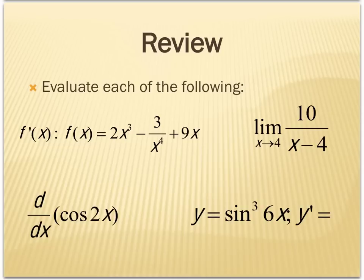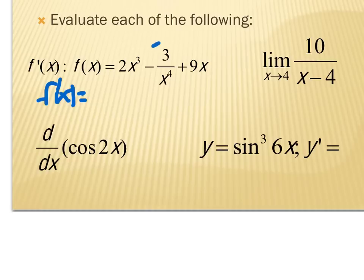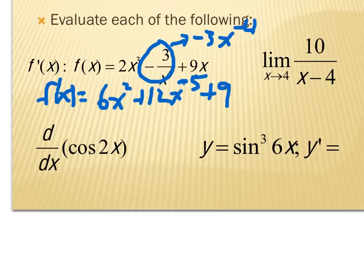More practice with different types of derivatives. The first one uses the power rule, but the middle term is tricky. A division is equivalent to a negative exponent, so we think of negative 3 over x to the 4th as negative 3x to the negative 4. Applying the power rule to each term gives 6x squared plus 12x to the negative 5, plus 9 — since 9x to the 0 derives to just 9. Once you remember that trick, it's a relatively easy derivative.